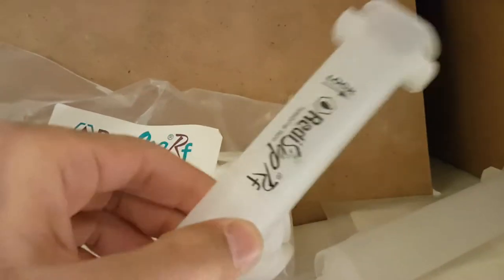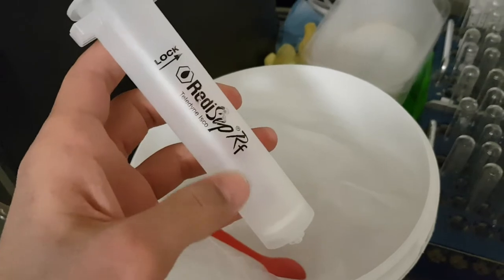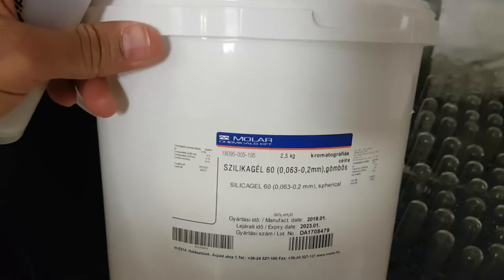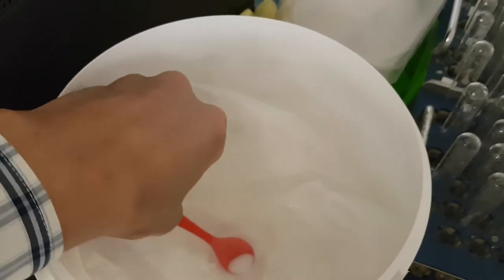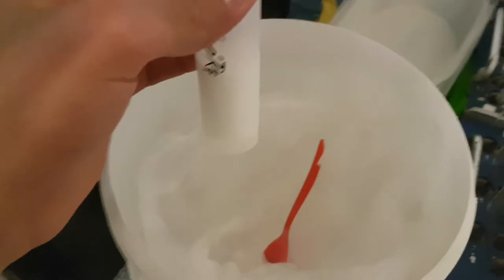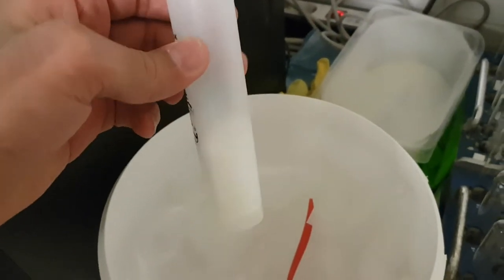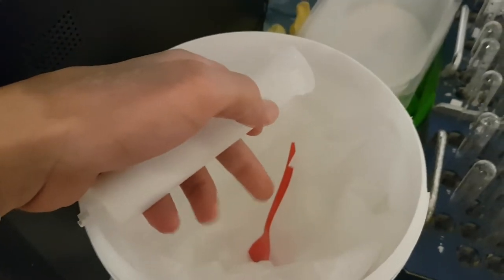Now we will load it with some silica gel. We can use this spoon. I think it seems to be enough for me. I just took some silica gel from here and I put it inside the cartridge.